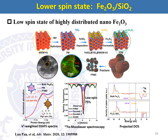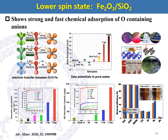Furthermore, we can also tune the spin state of iron oxides using special confinement to produce highly distributed iron oxides. We use silicon oxide as support; the strong interaction between iron oxides and silicon oxides can significantly increase the oxidation valence of iron, and the sample shows very strong and fast chemical adsorption of oxygen-containing anions.